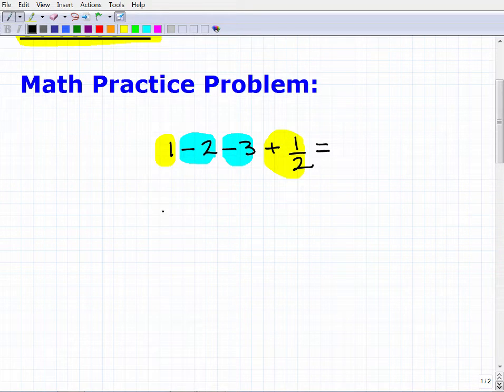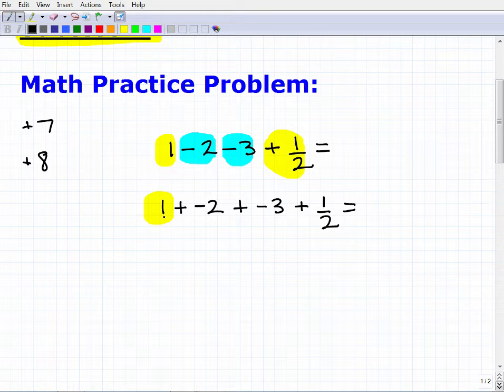Let's go back to our problem. So now we're dealing with positive and negative numbers. Now let's write this problem a little bit differently. So what if I had 1, instead of 1 minus 2 minus 3, let's write it as 1 plus negative 2 plus negative 3 plus 1 half. Now I have a positive 1. Anytime you see a number, like just 1 or 7 or 8 doesn't make a difference, and you don't see anything in front of it, if there's no negative sign in front of it, they're all positive. So I have a positive 1, and I also have a positive 1 half.